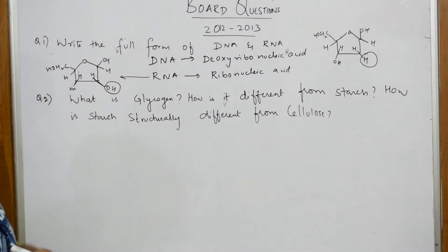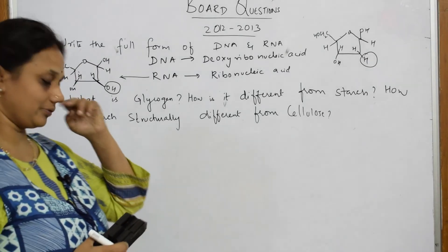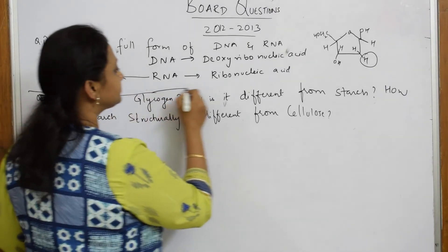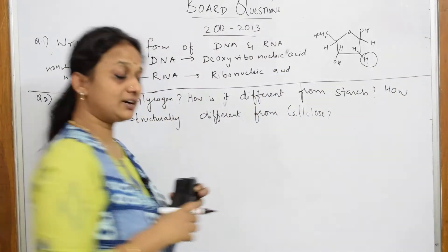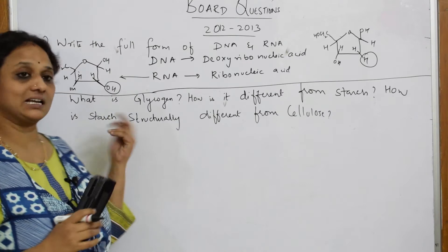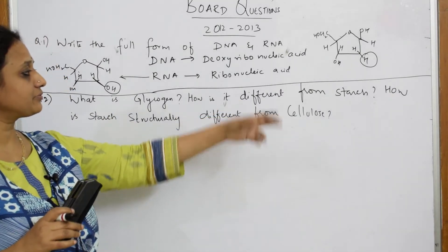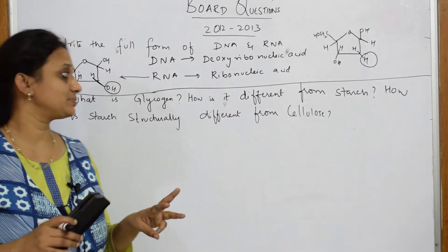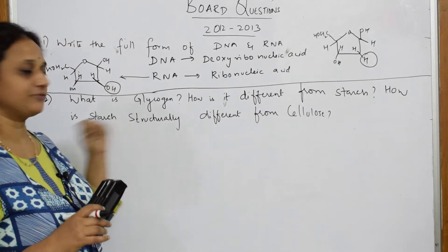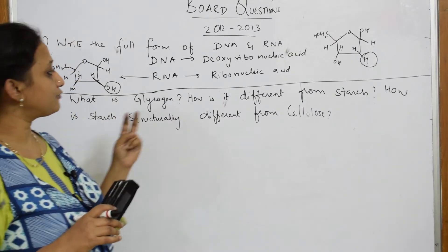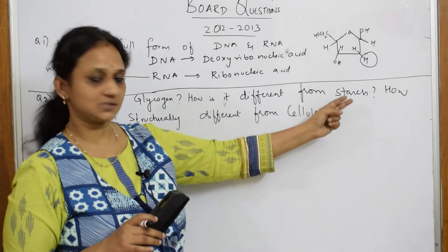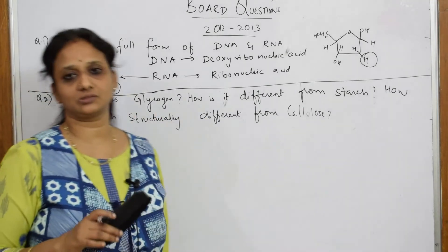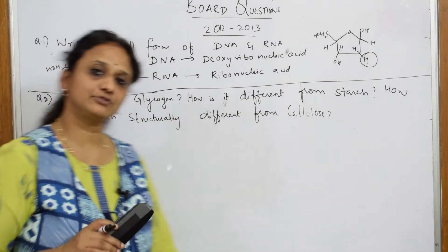They want you to write the full form; if you are confident enough, write the structures also. Now there is one more question: they have asked me to define glycogen, how it is different from starch, and how starch is structurally different from cellulose. There are three parts: first define glycogen, then compare glycogen with starch, then compare starch and cellulose.